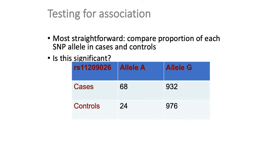Among your cases, you can divide individuals into those who have A or G. Among your controls, you can similarly divide individuals into those with A or G. In doing so, you build a 2x2 contingency table where the rows each sum to 1,000 — because there are 1,000 cases and 1,000 controls. Based on the number of people who have A's or G's, you can see that A is what's called a minor allele — it occurs at a lower frequency in your study population than G.